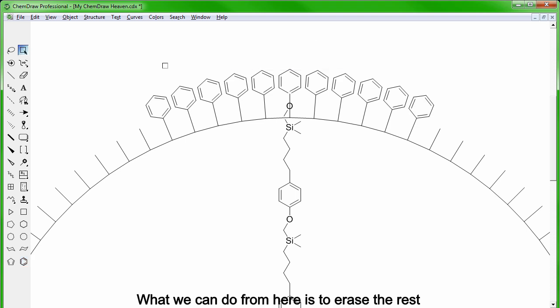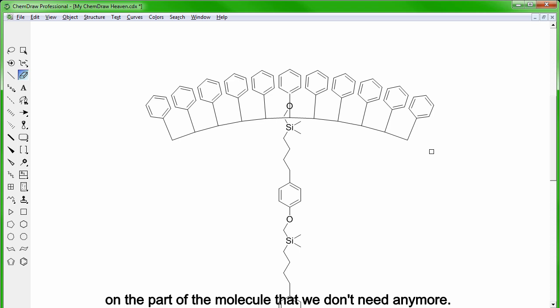What I can do from here is to erase the rest of the circular structure by deleting 2 of the bonds with the eraser tool and then double-click with the eraser tool on the part of the molecule that we don't need anymore. Still with the eraser tool we remove different bonds that we don't need so that we only have 11 benzene rings nicely oriented.